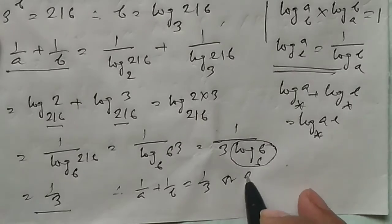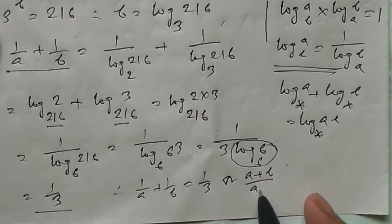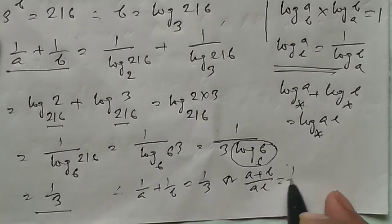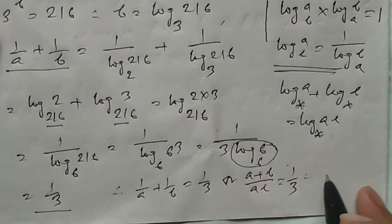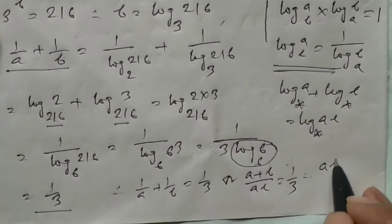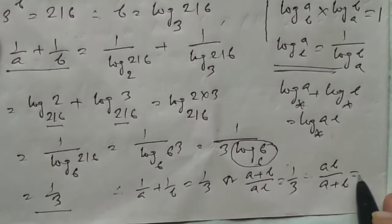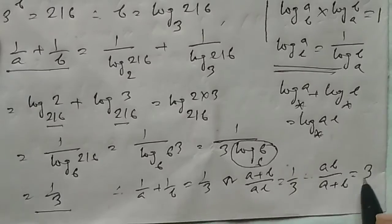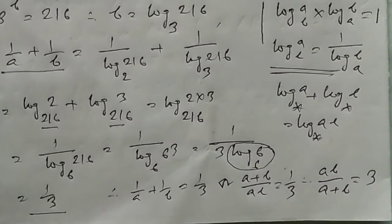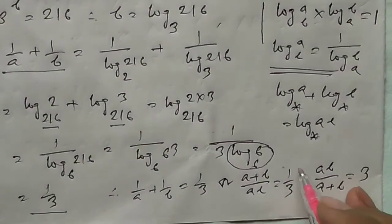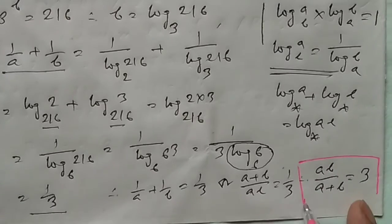Therefore (A plus B) by AB equals 1 by 3, or AB by A plus B equals 3. This is the final result.